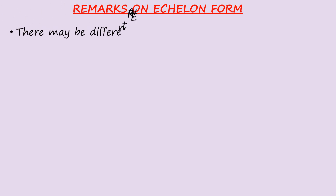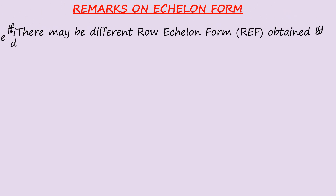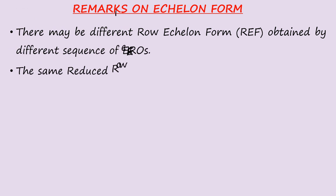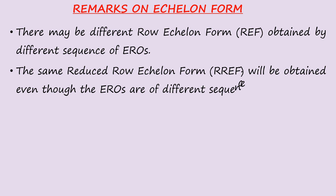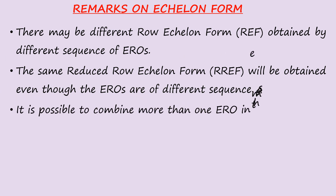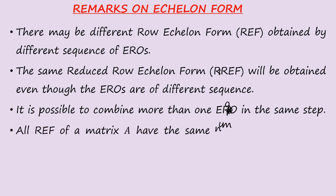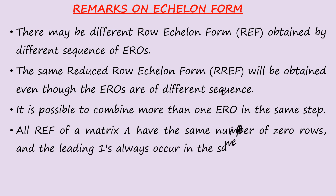Remarks on echelon form: there may be different row echelon forms (REF) obtained by different sequences of E-rows, but the same reduced row echelon form (RREF) will be obtained even if the E-rows are in a different sequence. It is possible to combine more than one E-row in the same step. All REFs of a matrix A have the same number of zero rows, and the leading ones always occur in the same positions.